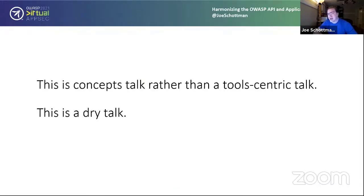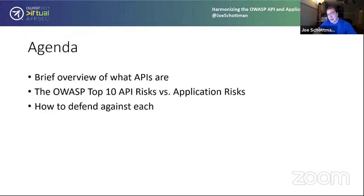A couple more notes: this is a concepts talk rather than a tool-specific talk — I'm not going to say use Burp Suite to do this or that. It's pretty dry; there's a lot of technical content and not a lot of memes. If sitting through a PowerPoint isn't what you want right now, feel free to grab a copy of the slides on Twitter and read them at your own leisure. The agenda: a short overview of what APIs are and common technologies, then a deep dive into the OWASP top 10 API risks versus application risks, with information on how to defend against each.